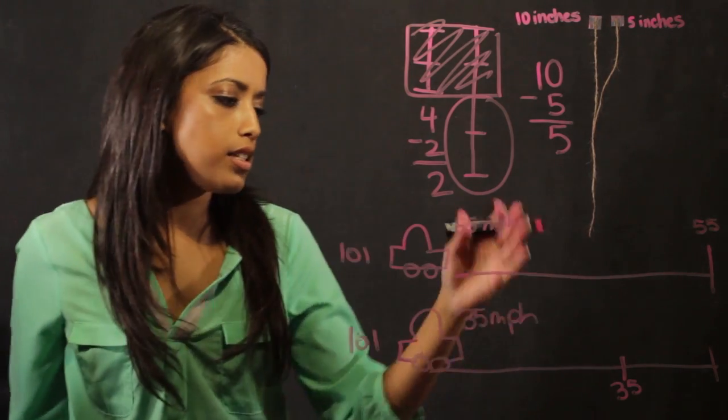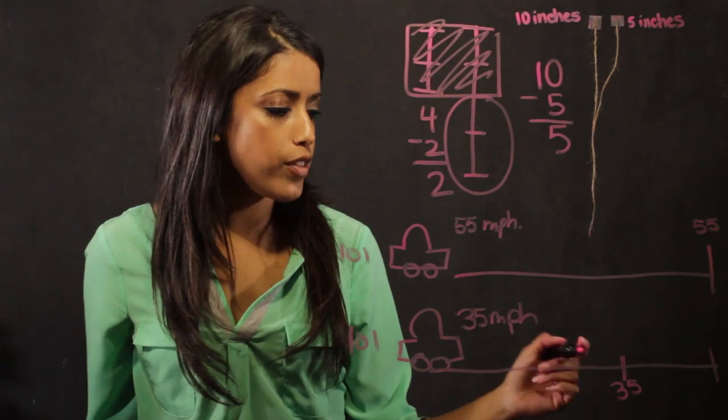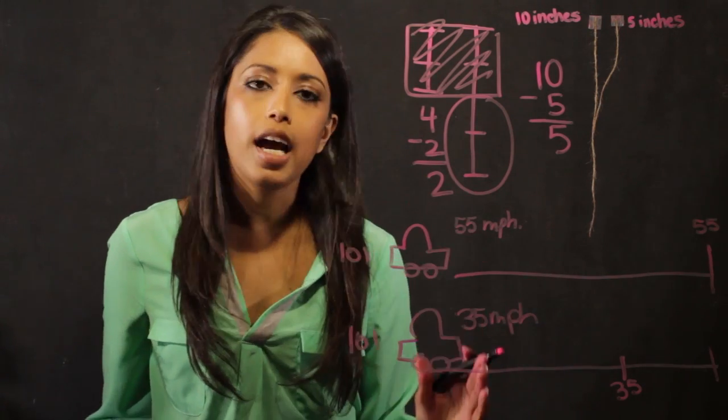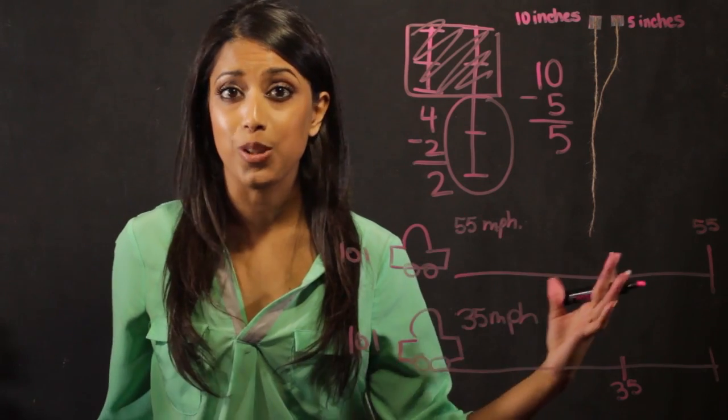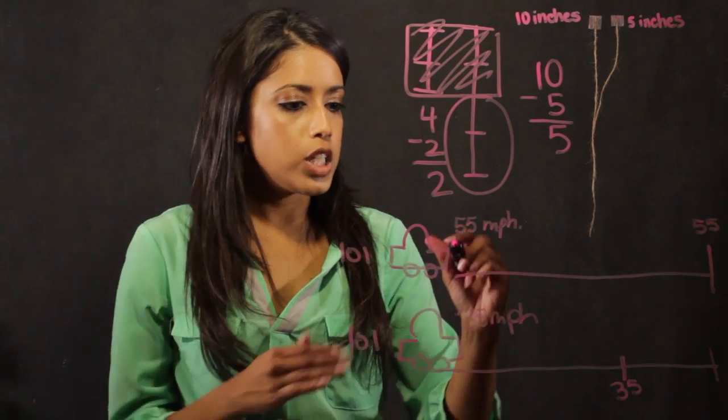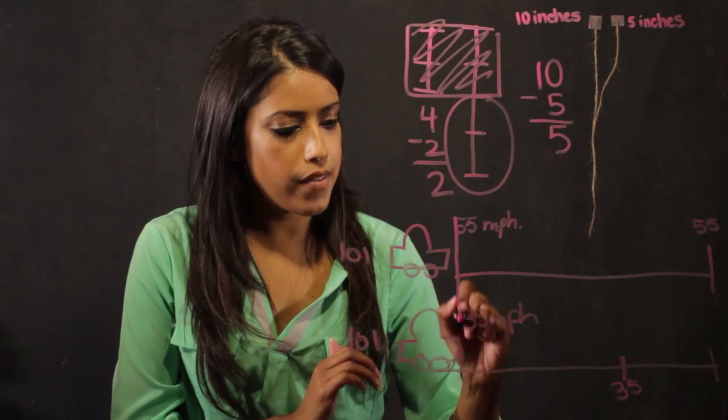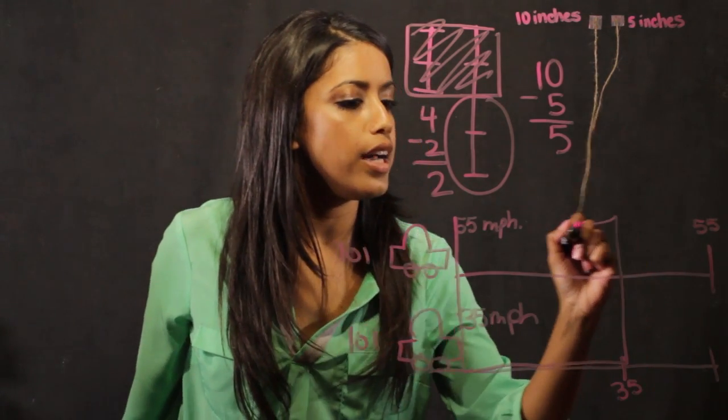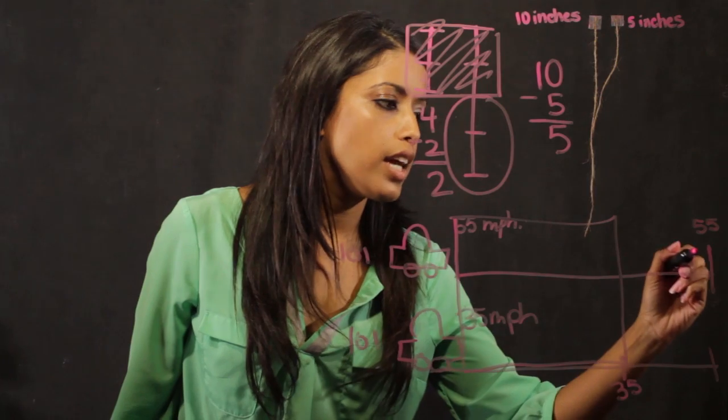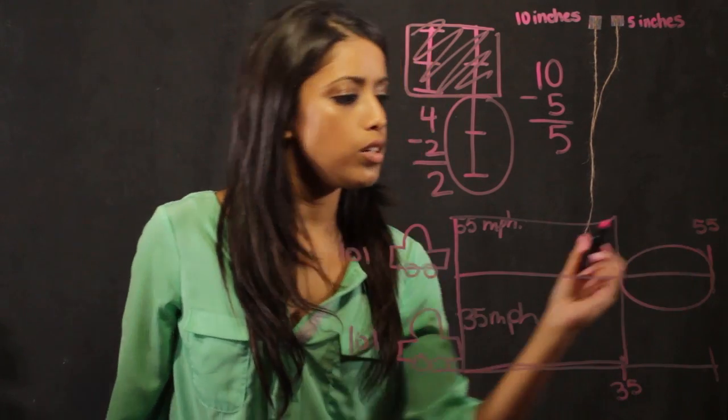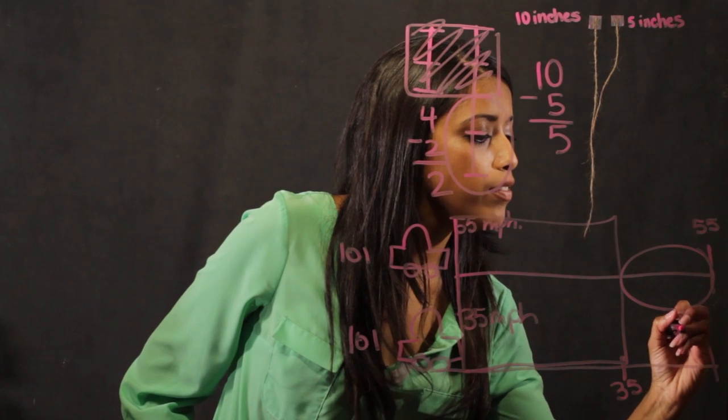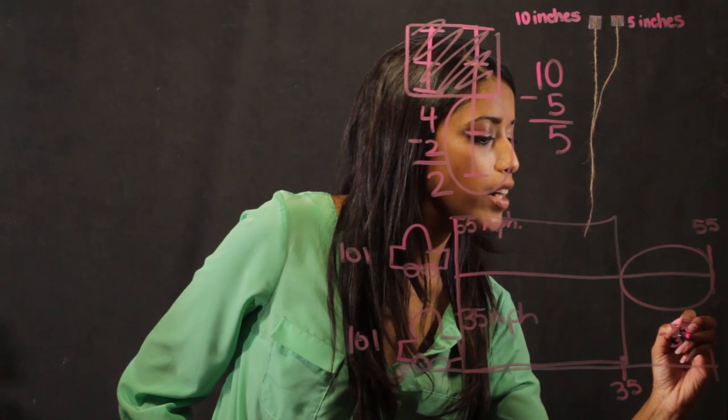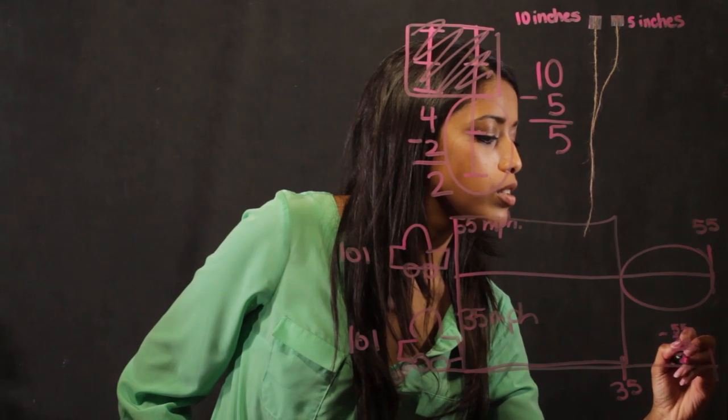So when I look at the distance that these two cars have traveled after an hour, I take out what they have in common and see what is the remaining distance. And that will be the answer to my subtraction problem. So I take the distance they have in common, which is here, all the way up to 35. And this remaining length here will be my answer. So I get the answer to my problem, 55 minus 35 is equal to 20.